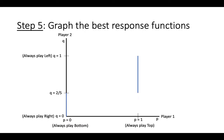For any value of q greater than 2 fifths, player 1 should always play top. And for q equal to 2 fifths, player 1 is indifferent between bottom and top, so any value of p is a best response to player 2 playing left with probability 2 fifths. We now have player 1's best response function.